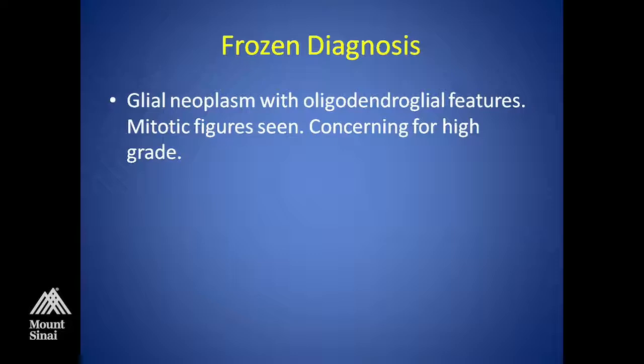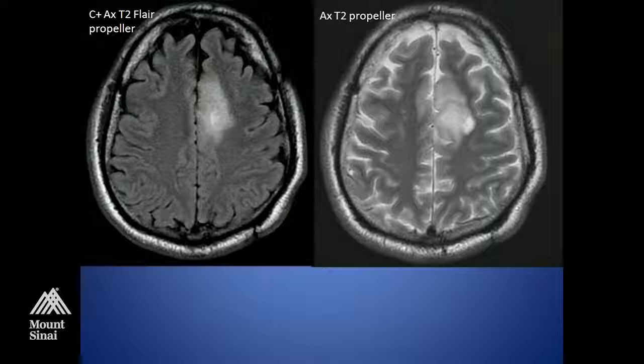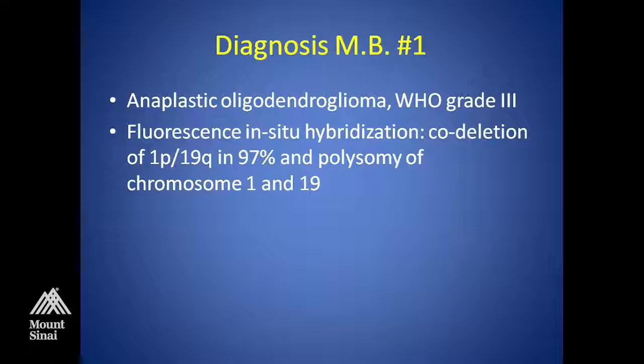I said this was concerning for high-grade. Here's the radiology — if you have it before the frozen, it's helpful, because oligodendroglial tumors typically are more infiltrative into the cortex and love cortex. If you've got expansion of the cortex by the tumor, that's a clue you might be dealing with an oligodendroglioma. On permanent diagnosis, this was an anaplastic oligodendroglioma, WHO grade 3, with FISH confirming 1p19q co-deletion in 97% of cells, but there was also polysomy of chromosomes 1 and 19, indicating potential for a more aggressive tumor.